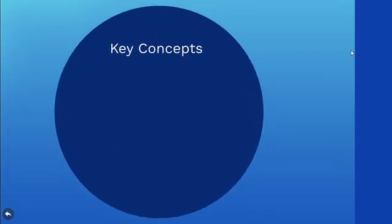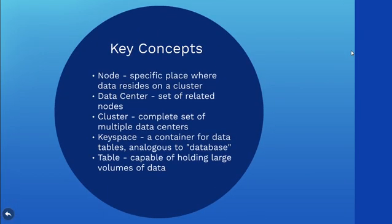Last but not least, let's know what a few terms in Cassandra mean. A node is the specific place where data resides on a cluster. A data center is a set of related nodes grouped together. A cluster is a complete set of multiple data centers on which the entire data is stored for processing. A keyspace is a container for data tables and is analogous to a database in a relational DBMS. And a table is somewhat like a relational table but capable of holding large volumes of data.